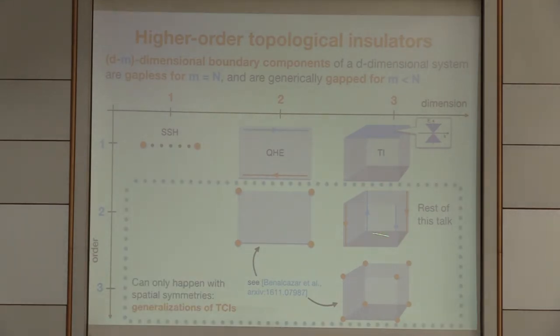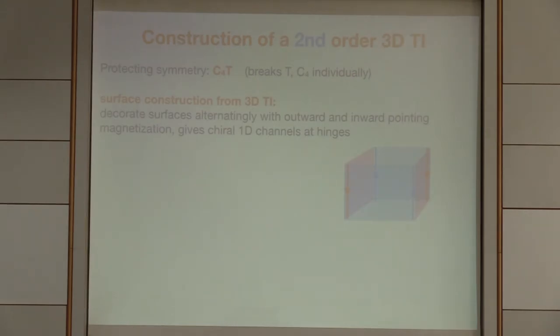Now, all of these higher-order topological systems need some spatial symmetry for their protection. There's no way that you can argue to generically cut a system and you'll always find, just protected by a local symmetry, such corner modes. You always need something like inversion, rotation, mirror symmetry, something non-local. So in that sense, these higher-order topological insulators are generalizations of topological crystalline insulators.